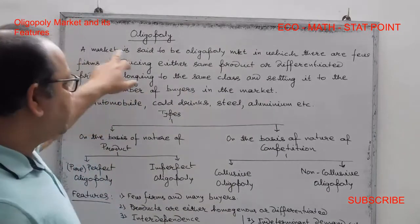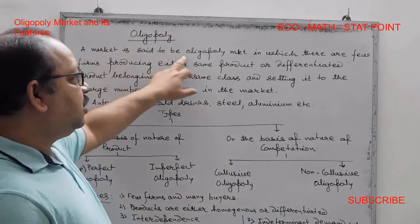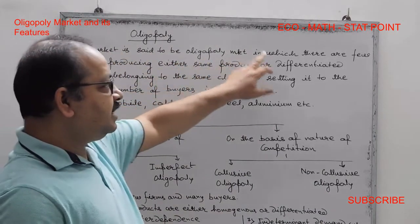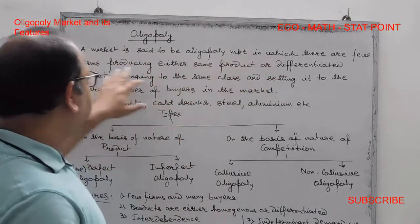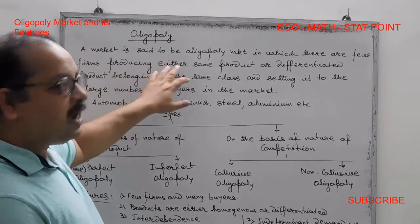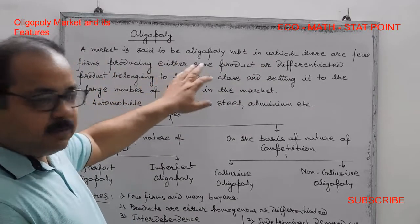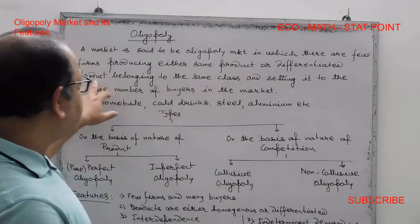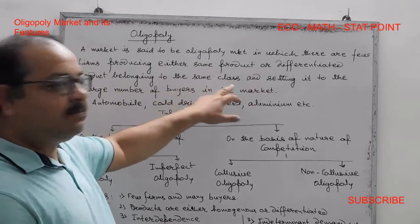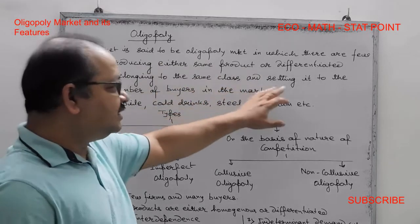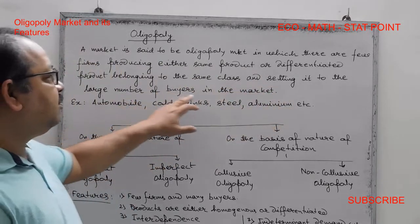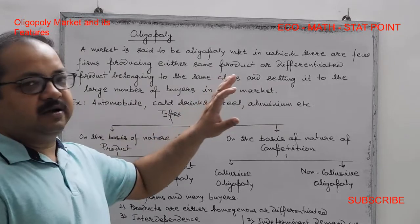This market is said to be an oligopoly, in which there are few firms producing either the same product or a differentiated product belonging to the same class, and selling it to a large number of buyers in the market.